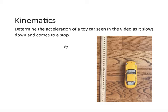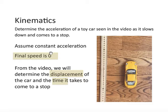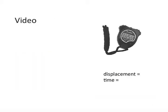Determine the acceleration of a toy car seen in the video as it slows down and comes to a stop. So, in a moment, I'm going to show you this toy car that will be moving forward. It's a video I made myself. And it's going to come to a stop. So, again, we have to assume constant acceleration in order to be able to use those formulas. And that's a good assumption in this situation. Our final speed is going to be zero. That's one variable because the car is going to come to a stop. And so, from the video, we will determine two things. The displacement of the car and the time it takes to come to a stop.